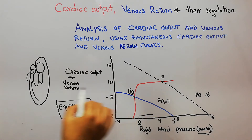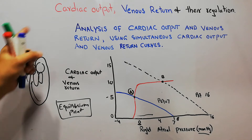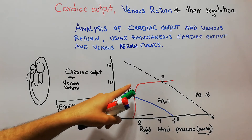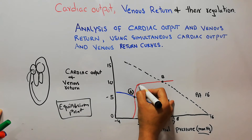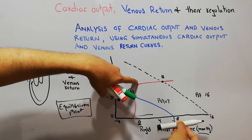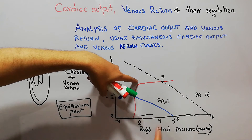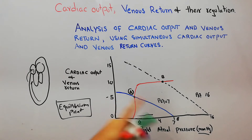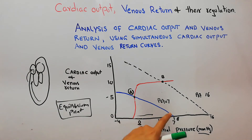With increasing right atrial pressure, more blood returns so the heart pumps more — cardiac output increases. However, after a point there is a plateau: even with further increase in right atrial pressure, there is no more increase in cardiac output. Meanwhile, venous return starts decreasing with increasing right atrial pressure and eventually reaches zero.